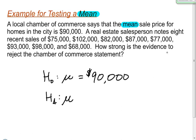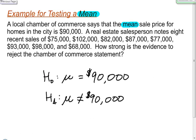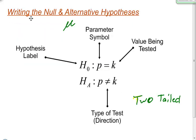The question asks: how strong is the evidence to reject the chamber of commerce statement? There's nothing in the example telling me the mean should be less than or greater than $90,000, so since there's no directionality, the alternative hypothesis is simply not equal to $90,000, making this a two-tailed test. Hopefully this helps you understand how to write null and alternative hypotheses for your stats class!